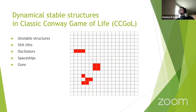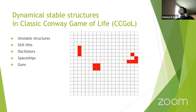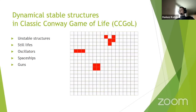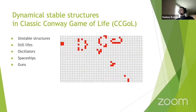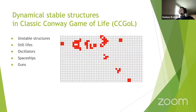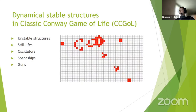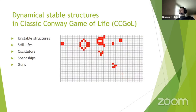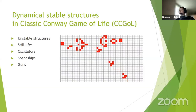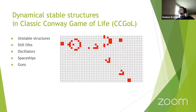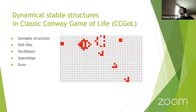Structures can also move. Spaceships travel across the board, and one example is the glider that can be observed on the screen. We can also combine several structures to obtain guns, which consist of an oscillator that shoots spaceships. The most spectacular videos of Conway's Game of Life in action consist of numerous guns firing all over the map.